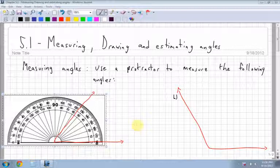First thing I want to look at is how to measure an angle. The best way to measure an angle is to use a protractor. If you don't have one you should probably get one for the course, and you'll probably need one on the provincial exam anyways.